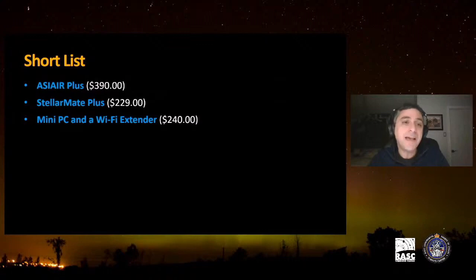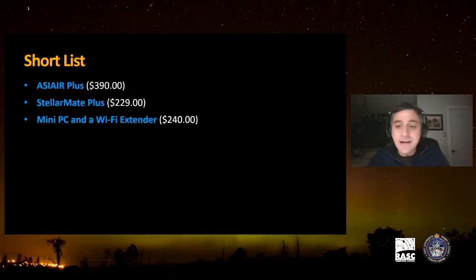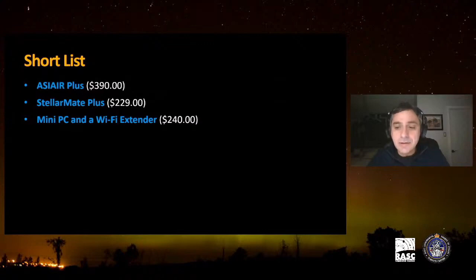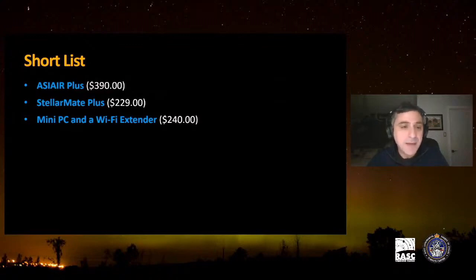One reason to exclude the ASIAIR Plus was also my focuser compatibility. Another option was Stellar Mate — also a very good option, based on the INDI library, running on Windows, Mac, and Linux. The Pro version has additional features like polar alignment, live video, and cloud storage, but you have to pay a subscription of around $4.99 per month.